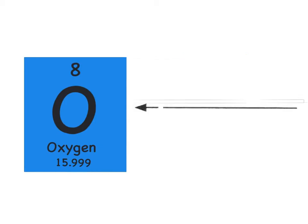Now each element within the periodic table has its own symbol. They always start with a capital letter — very, very important. Sometimes they have a capital and a second letter, and we've gotten so many elements now that sometimes they even have three letters and only the first is capitalized. On the line that's pointing at the letter O, you need to write 'symbol.' You will actually be using the symbol a lot in life because we use them for compounds and when we're identifying molecules, so they're very important.